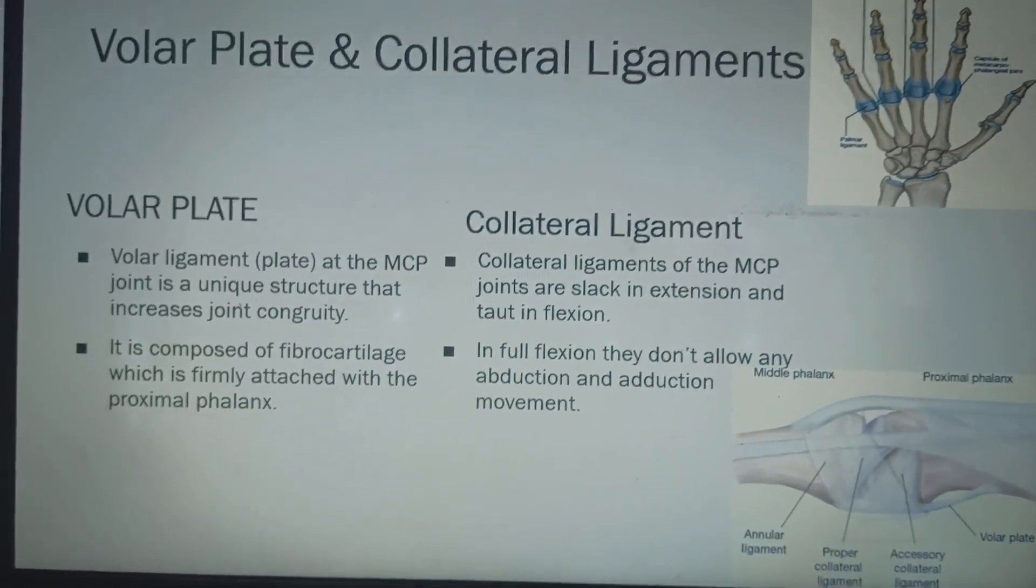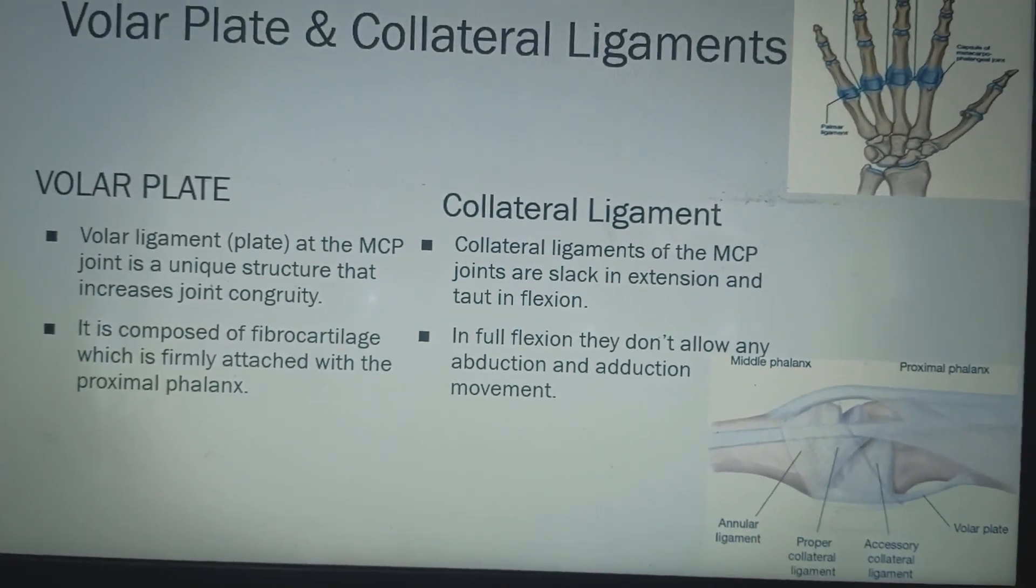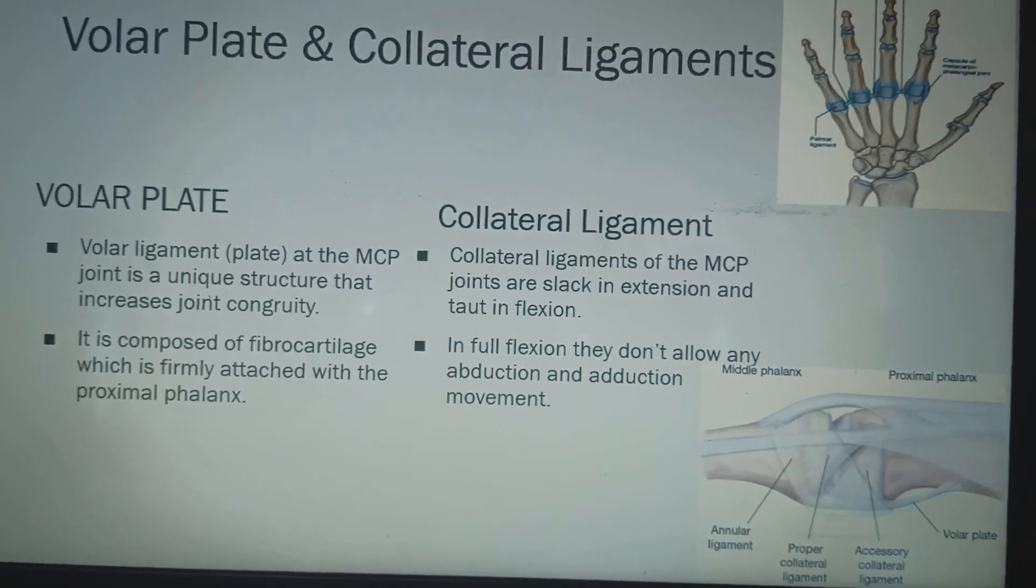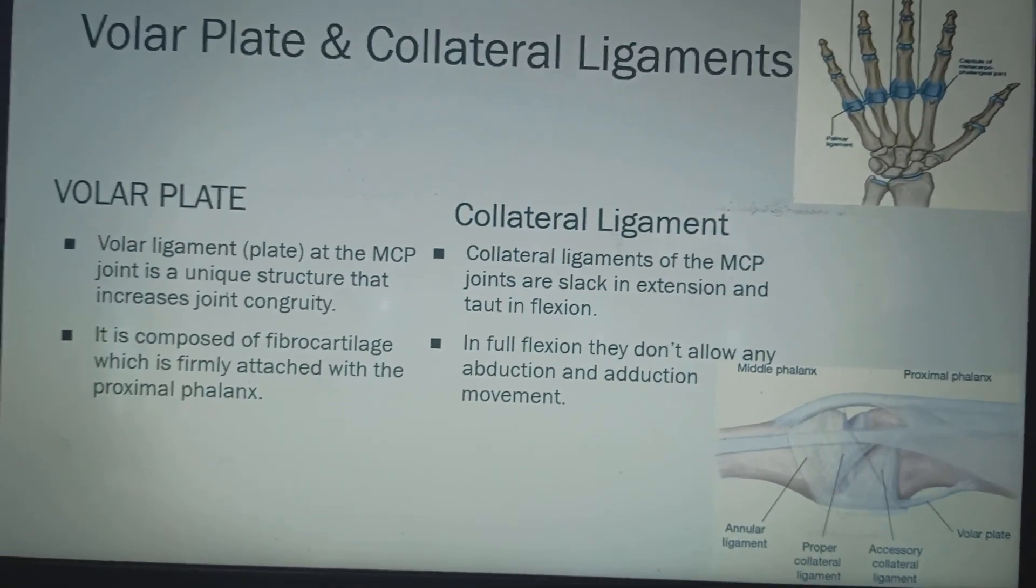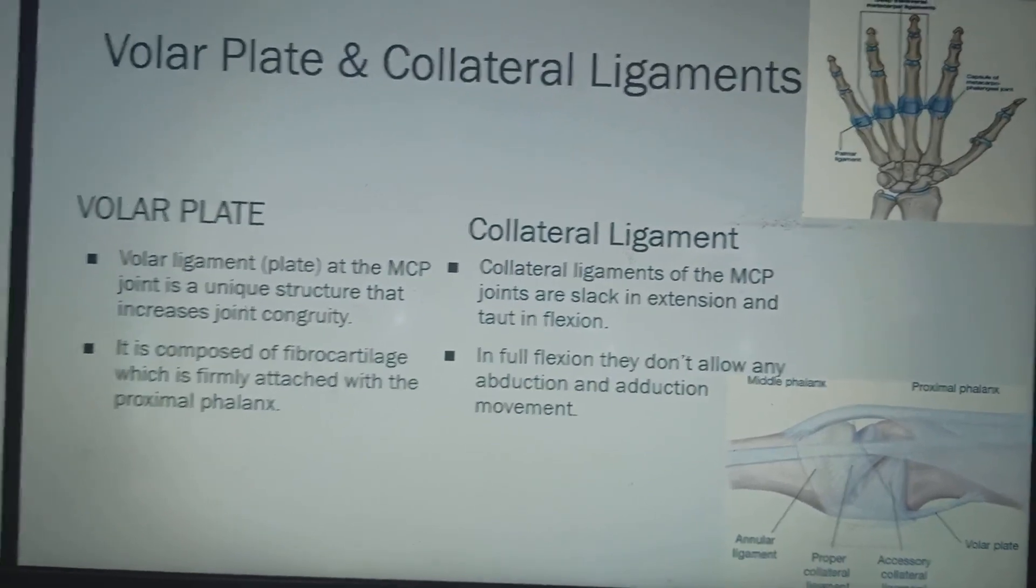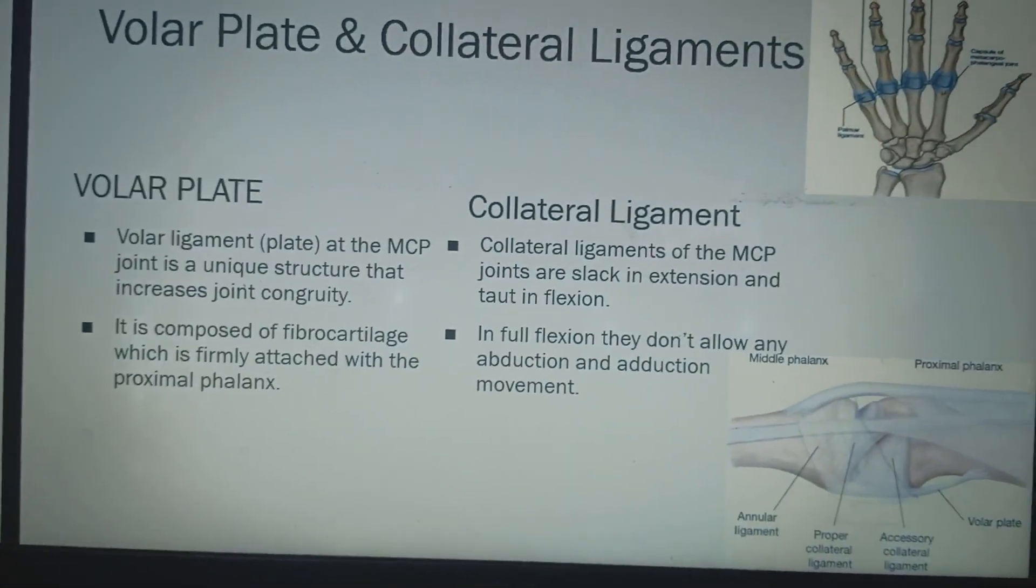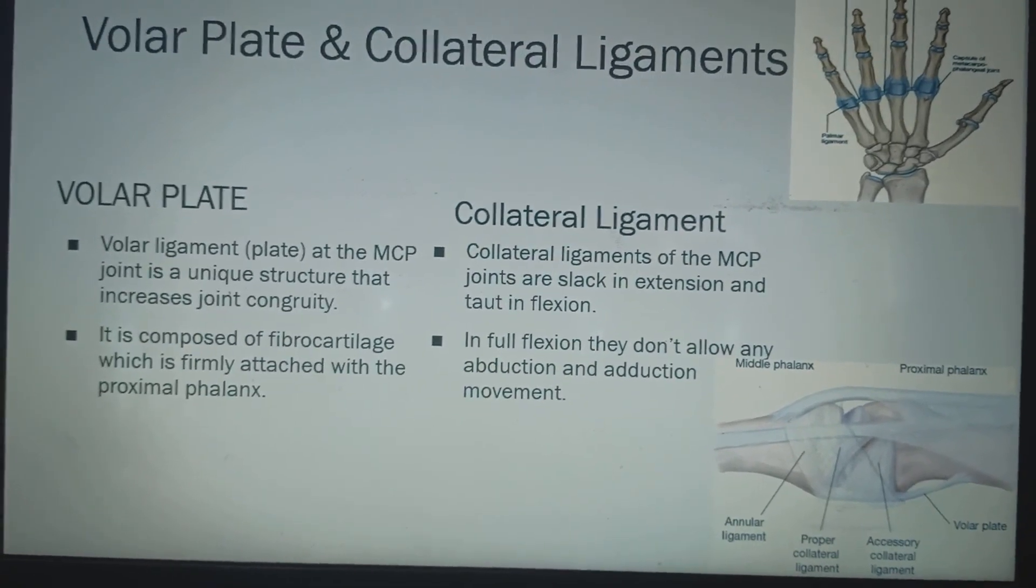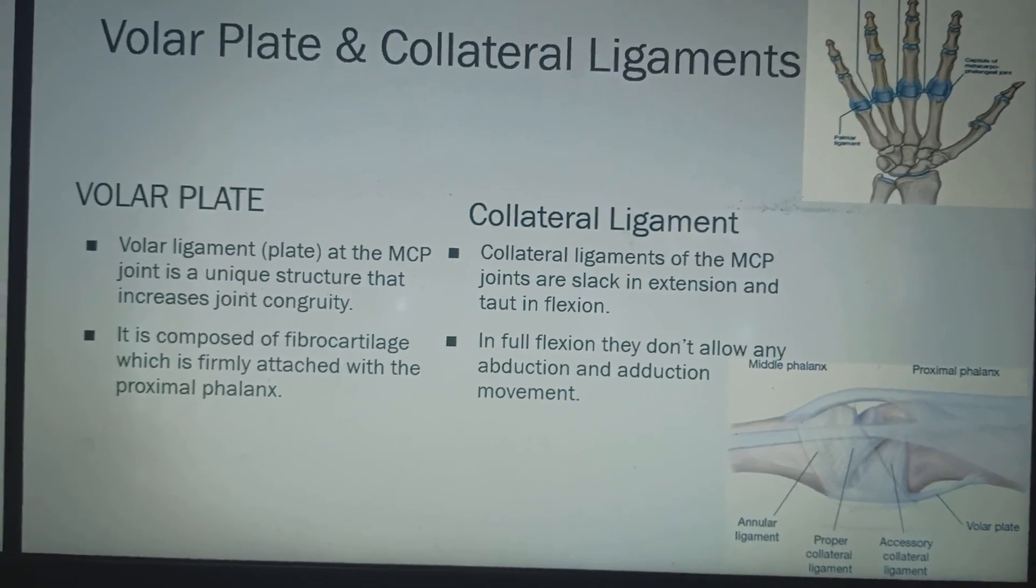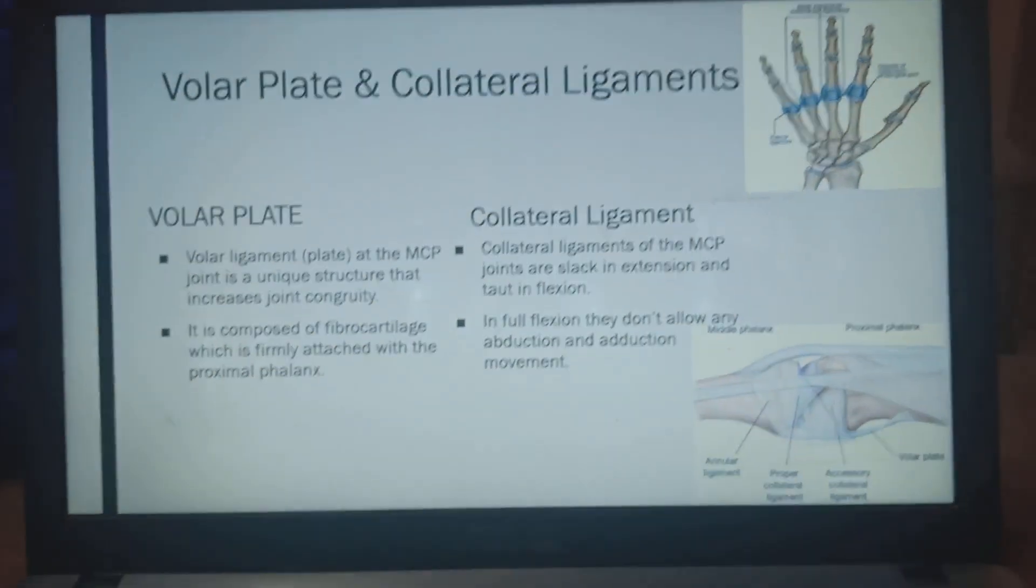And what is the function of these ligaments? Simple. The volar ligament or volar plate at the MCP joint is a unique structure that increases joint congruity. Similarly, these plates also is over the PIP and DIP joints. These are composed of fibrocartilage and is firmly attached with proximal phalanx.